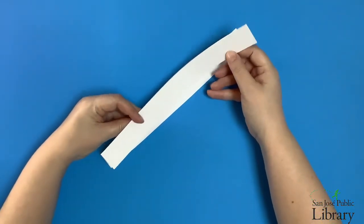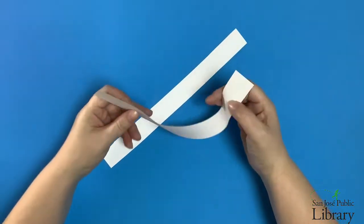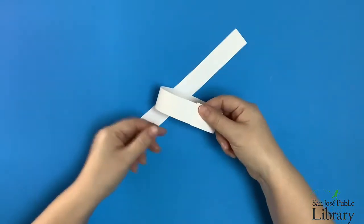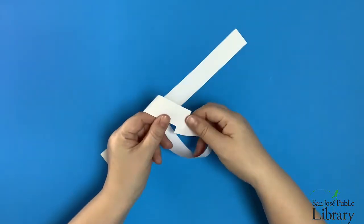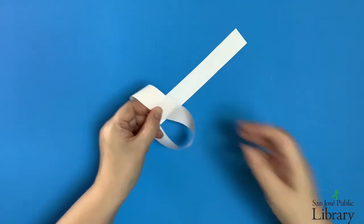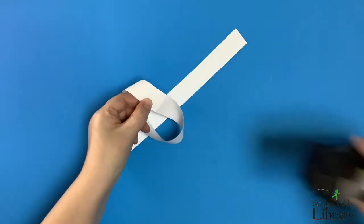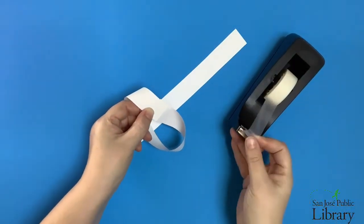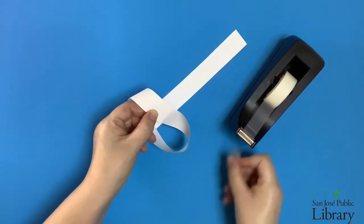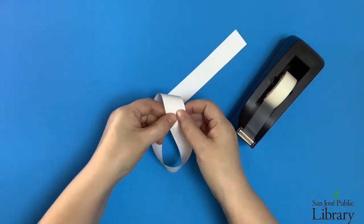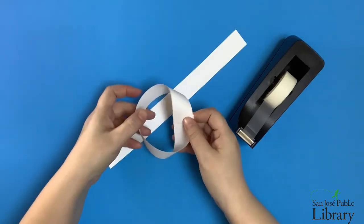You may have seen a Mobius strip before. You take a strip of paper with two sides, just a normal piece of paper. You bring the ends together, but you give one of the ends a little half twist before you tape the two ends together. This half twist has a very curious property because now our strip of paper, instead of having a front and a back,